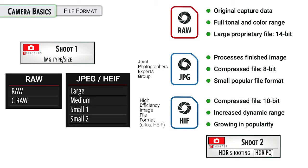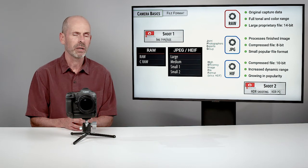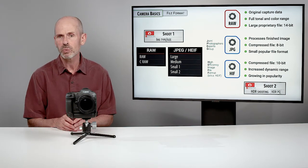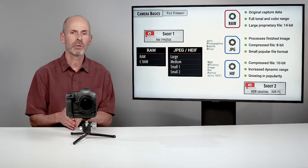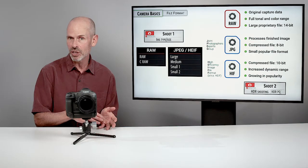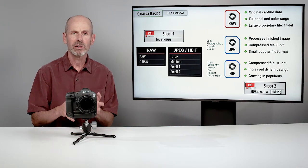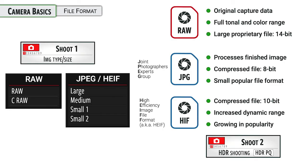This camera also has a relatively new option called the HEIF format — I like to think of it as an improved JPEG. It's kind of like JPEG in that it's a processed, compressed image that's small and easy to transfer, but it has a little bit greater range of dynamic ability with light, so you can do a bit more adjustment with highlights and shadows. If you go into shoot menu number two into HDR shooting — the HDR PQ — you can turn that feature on and off. When you turn it on, you put the camera in HEIF mode; when you turn it off, you are in JPEG mode. That is the one master control for either JPEG or HEIF images.